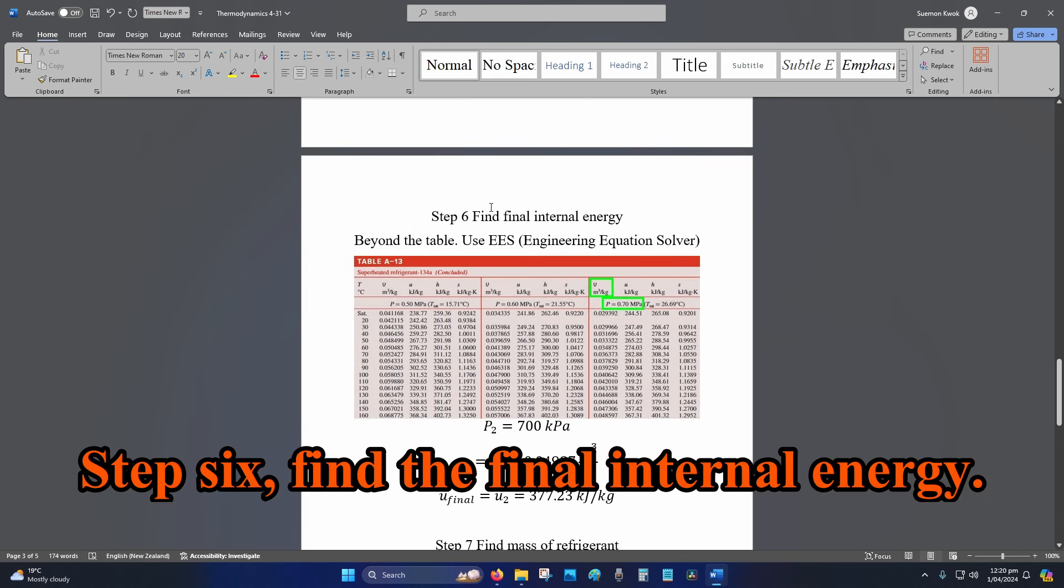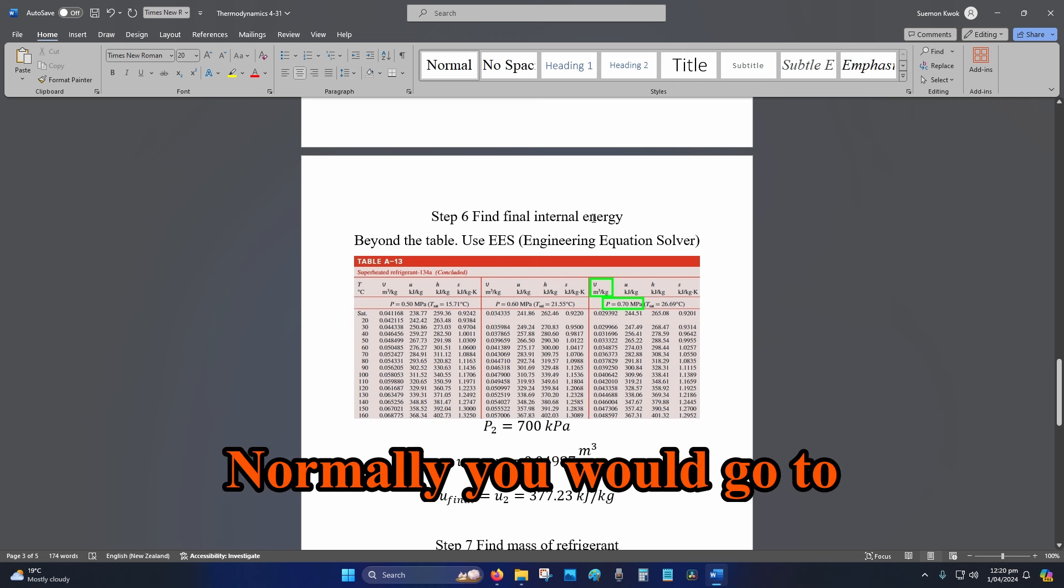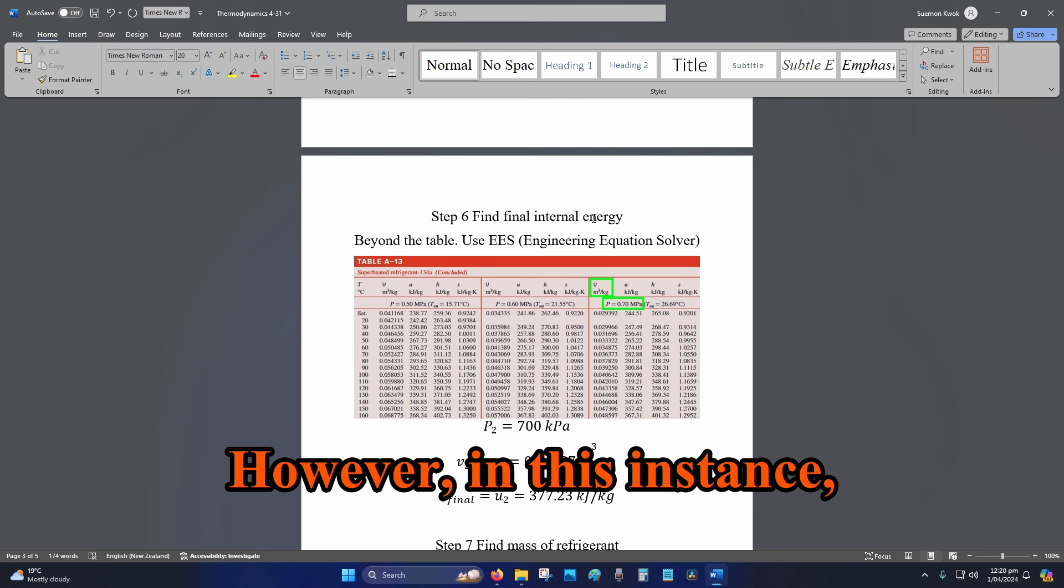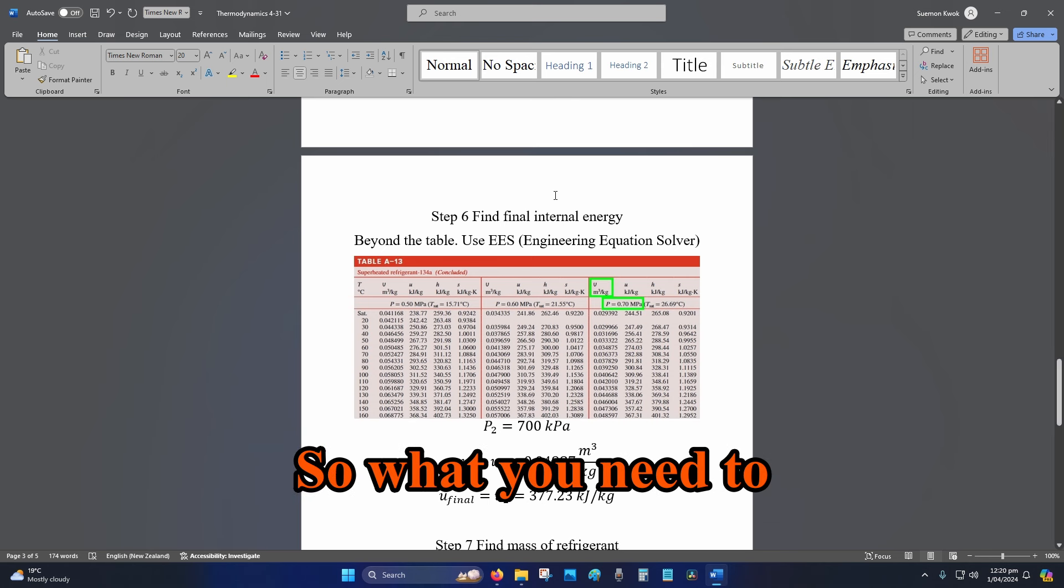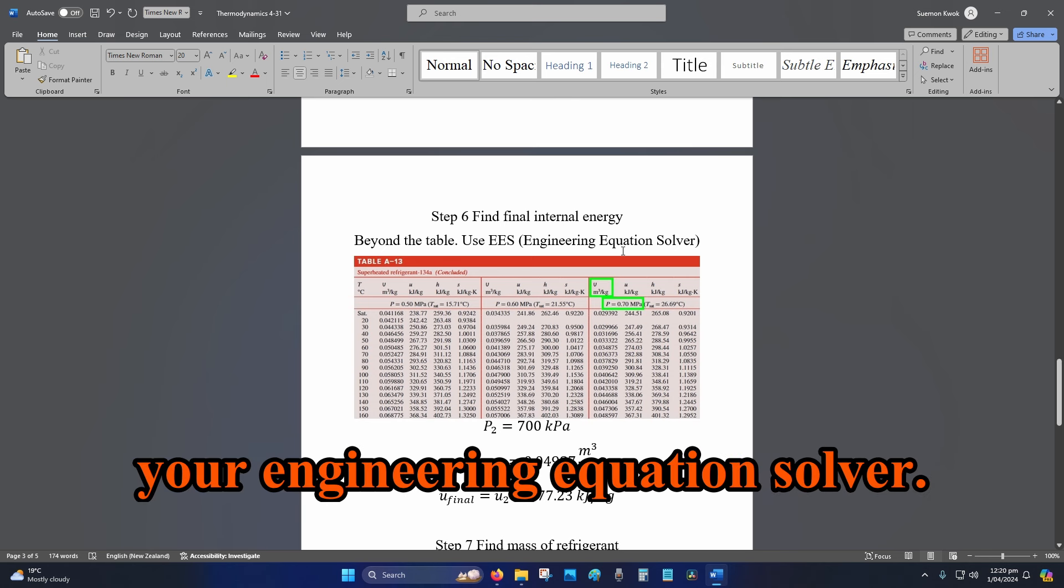Step 6: Find the final internal energy. Normally you would go to your table and look it up. However, in this instance, it goes beyond the table, so what you need to do is use your EES, your Engineering Equation Solver.